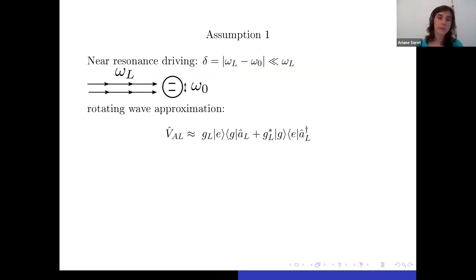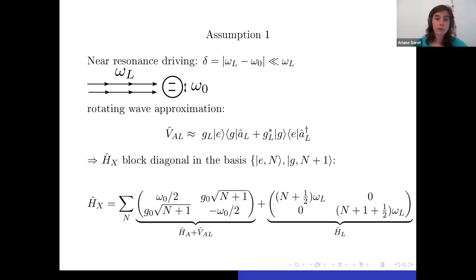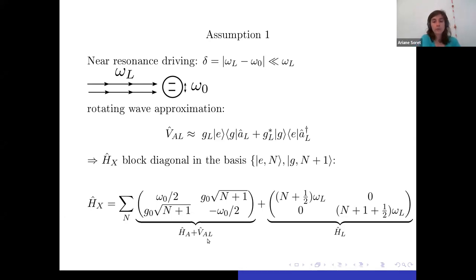The first assumption is that the laser is nearly resonant with the atom. This allows us to perform the rotating wave approximation, simplifying the atom-laser interaction and removing the off-resonant terms. With this approximation, the Hamiltonian H_X becomes block diagonal in the basis |e,n⟩ and |g,n+1⟩ — the joint basis for the tensor product space of the atom and laser. Under this approximation, the Hamiltonian can be written in that block form, with the atom and interaction terms grouped separately from the laser photon terms.